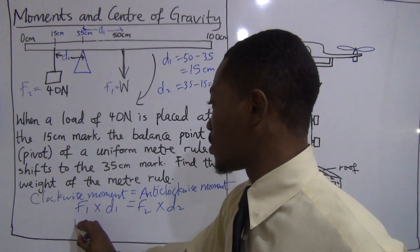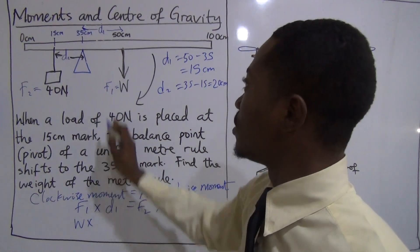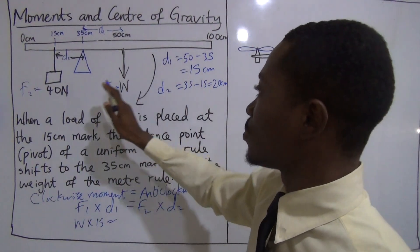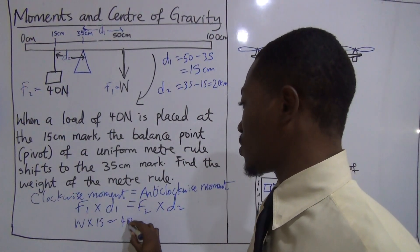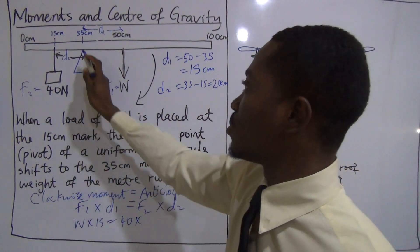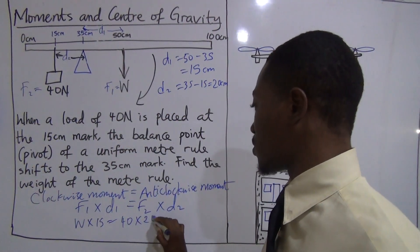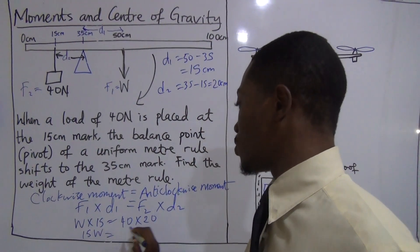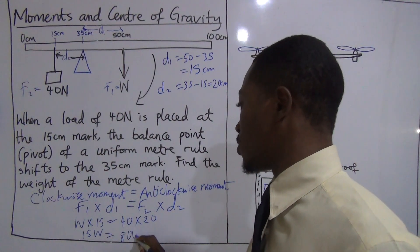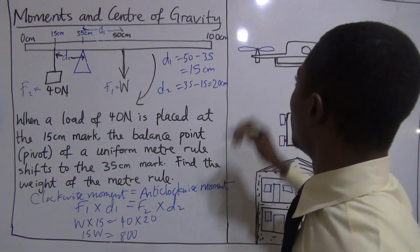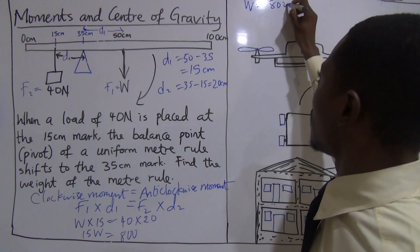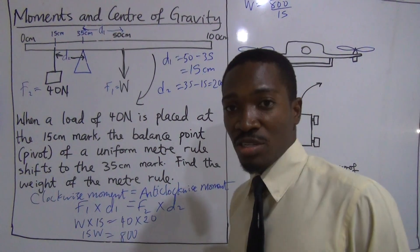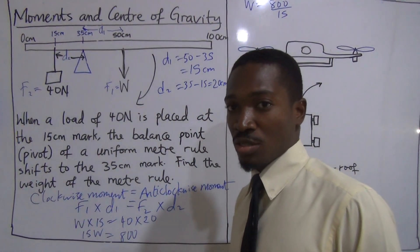Now we substitute these values into the formula. F1, which is the weight, times D1, which is 15, equals F2, which is the 40 newton force, times D2, which is 20 centimeters. Now let's multiply. This means 15W equals 40 times 20, equals 800. How you get W? W equals 800 divided by 15.